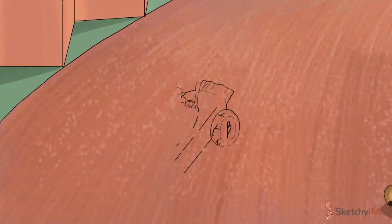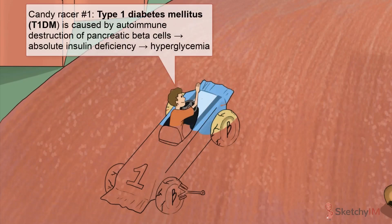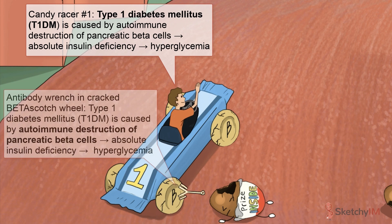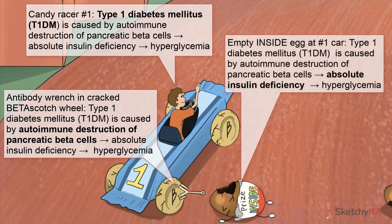On to race car number one. Type 1 diabetes accounts for 5 to 10% of diabetes in the United States. It's caused by autoimmune destruction of beta cells within the pancreatic islets, as depicted by the antibody wrench lodged inside that beta scotch candy. This leads to an absolute insulin deficiency and increased blood glucose. These patients require insulin therapy to survive.